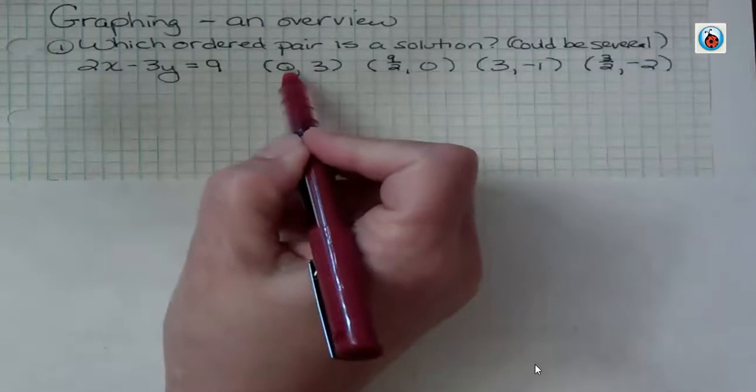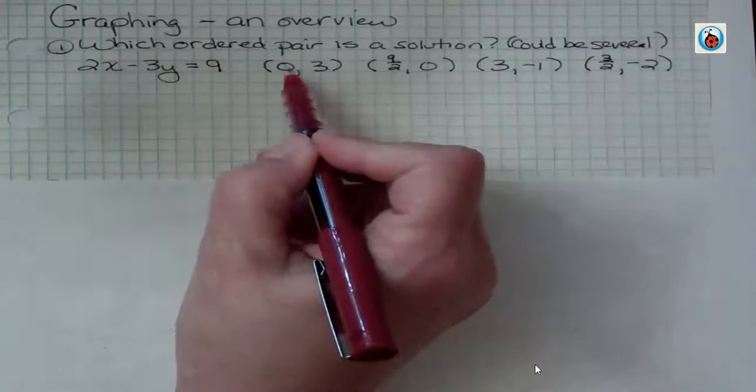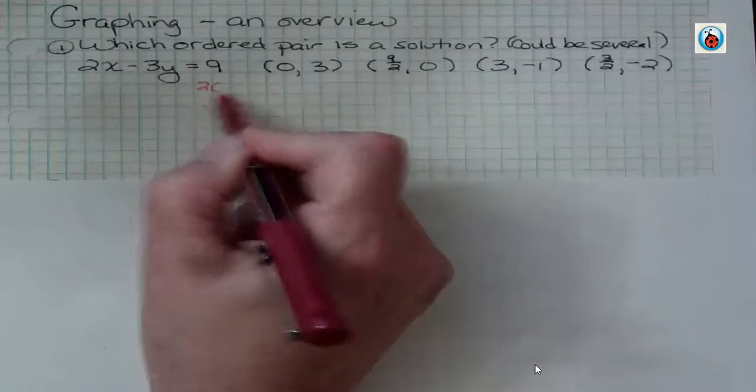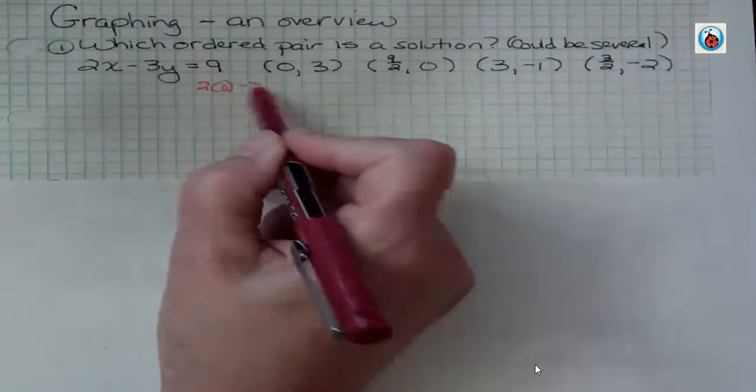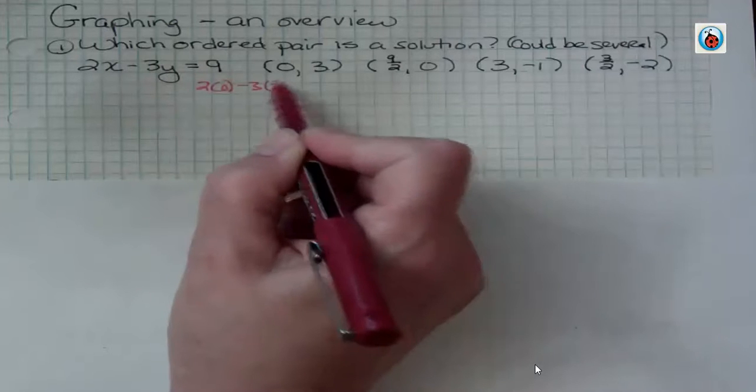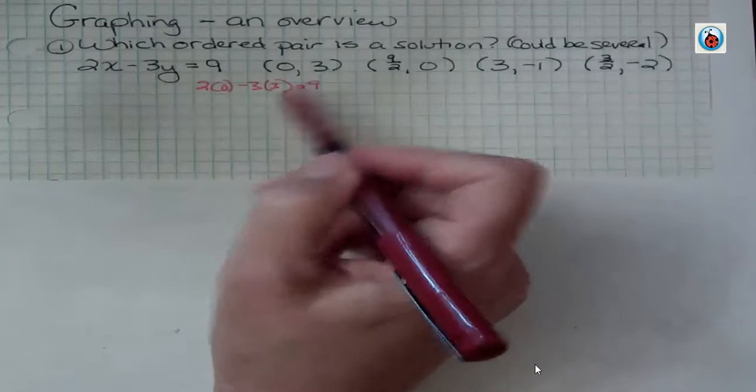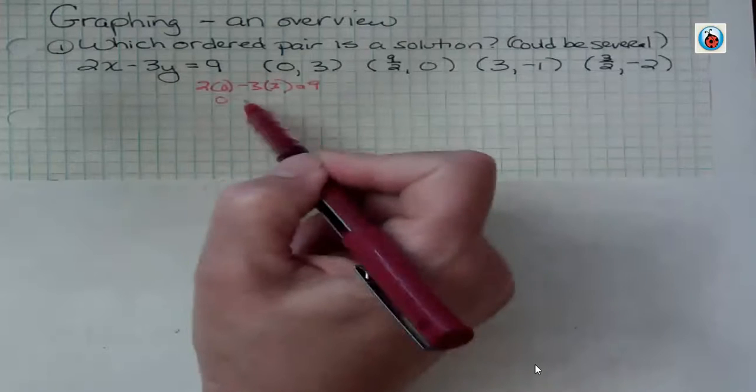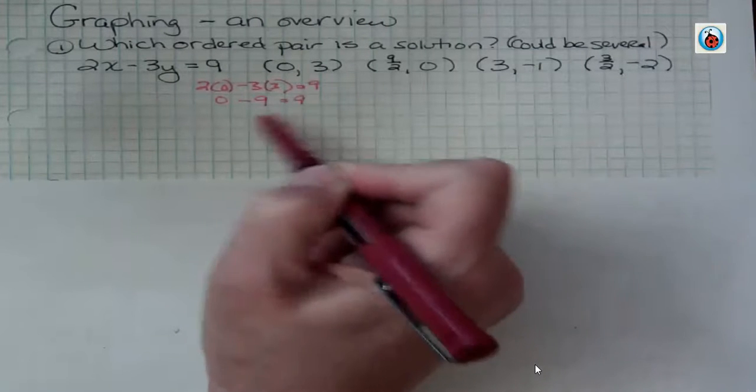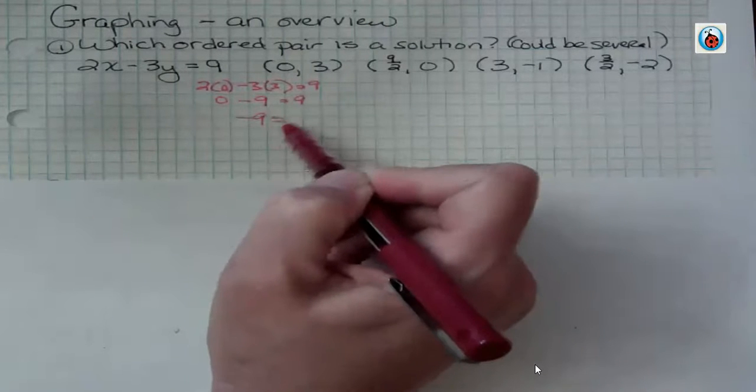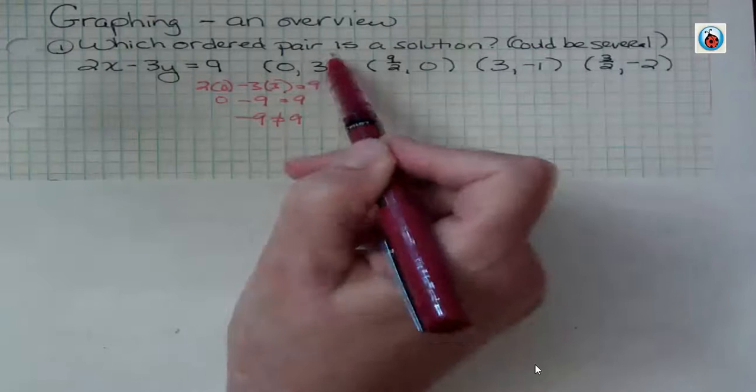So here I would take, where x, I would plug in 0, so 2 times 0, and then for y, I'm plugging in 3. It's a solution if the left side equals the right side. Well, 2 times 0 is 0, minus 9 is negative 9. Negative 9 does not equal 9, so that's not a solution.